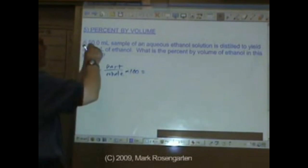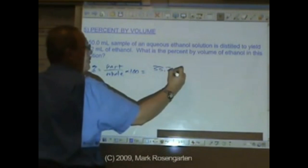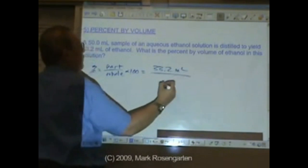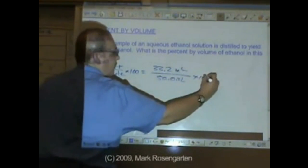We have a 50 milliliter sample. 33.2 milliliters of it is ethanol. 33.2 milliliters out of the 50 milliliter sample times 100, 66.4% ethanol by volume.